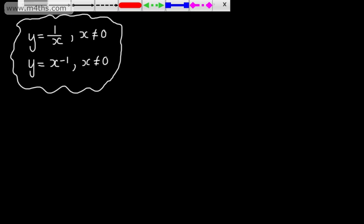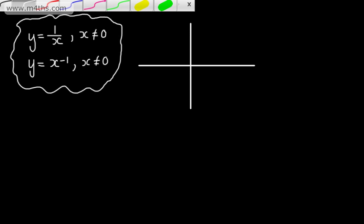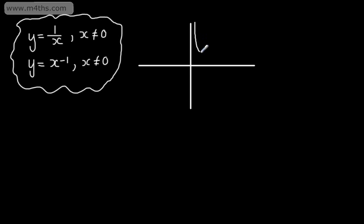So let's look at this graph and the shape and key features. To the right of the y-axis, the curve comes down and gets very close to the x-axis but never touches it. We have exactly the same shape to the left of the y-axis, and again the curve will never touch either of these axes.